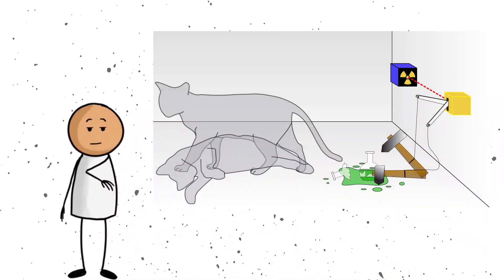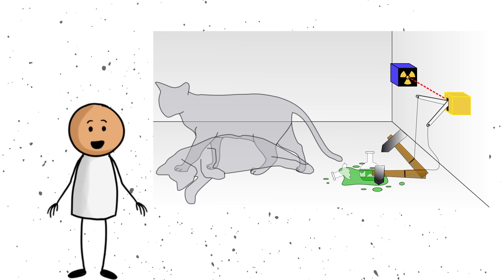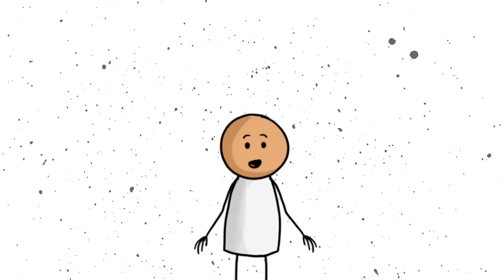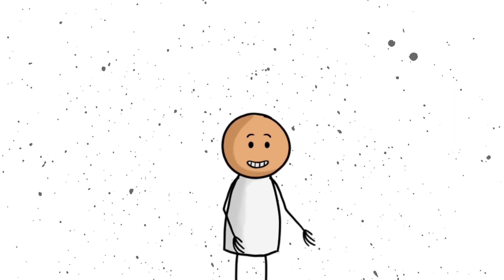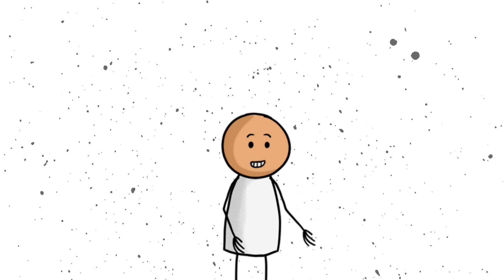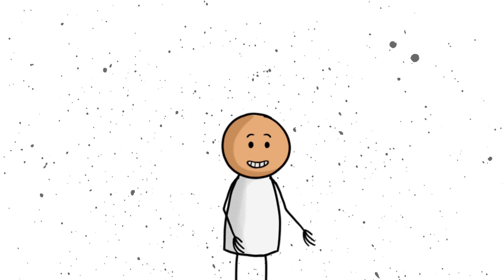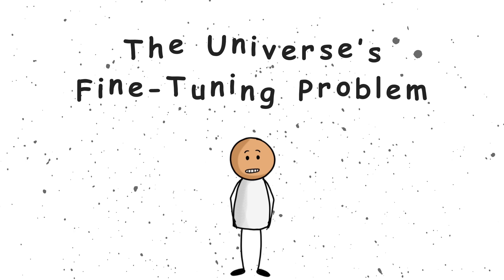These ideas are debated in physics classrooms, labs, and the occasional late-night pizza party for quantum nerds. The measurement problem is still unsolved. We know the math works. We can build amazing technologies, like lasers and MRI machines using quantum rules. But we still do not know why the quantum world behaves this way when someone is watching.